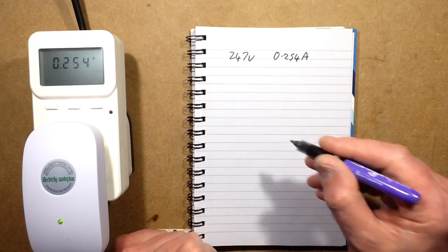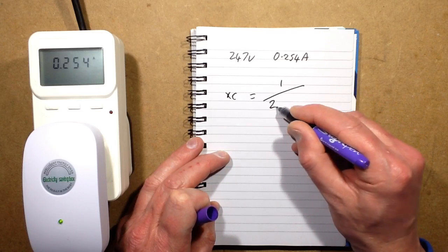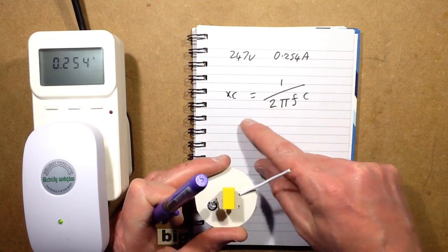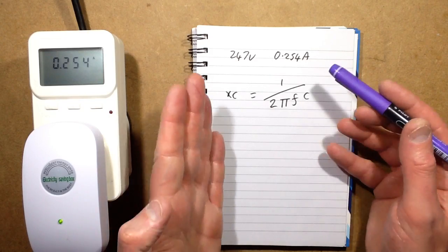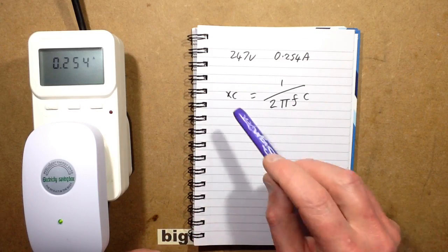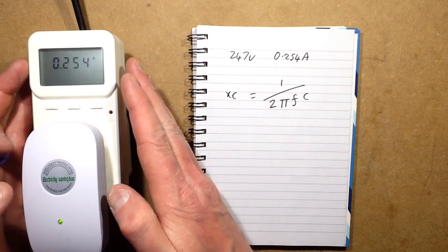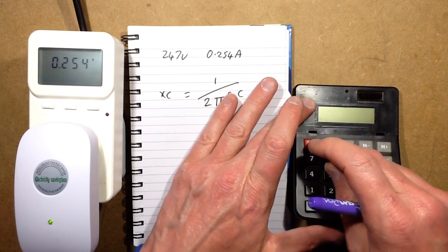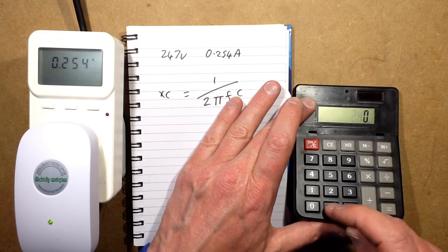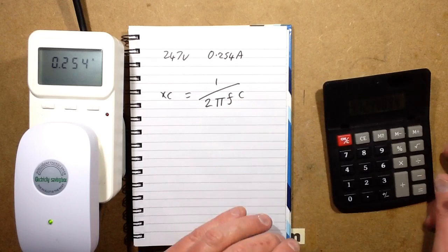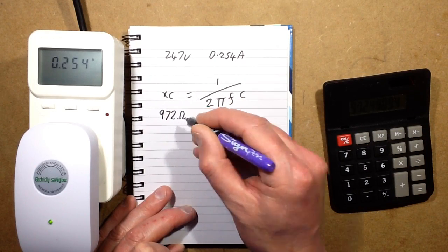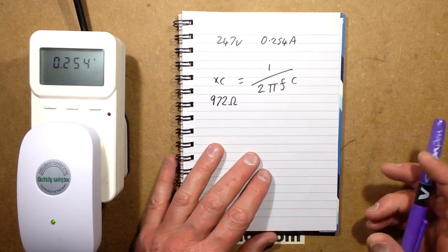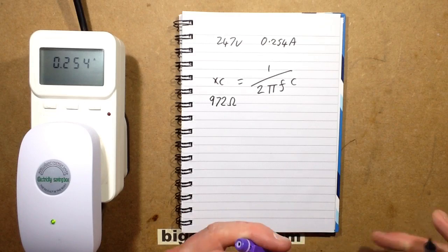Doing the maths: Xc equals 1 over 2 pi fc. Those who watch this channel a lot will have seen this formula a lot. This is one of those formulas that if they teach you at school just won't go into your head because it's boring, unless there's an actual application. In this case we can compute, so Xc capacitive reactance is the equivalent resistance the capacitance is posing to get that current.